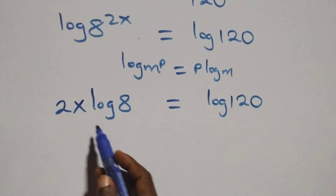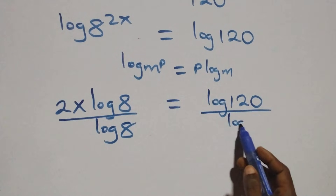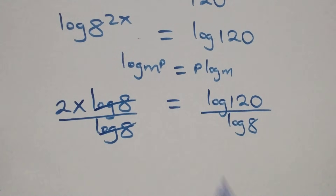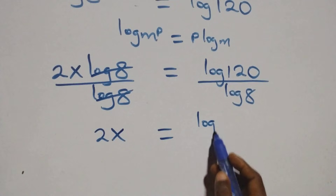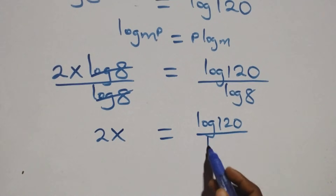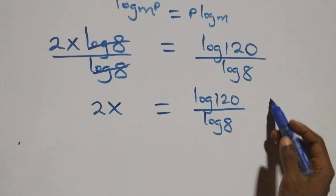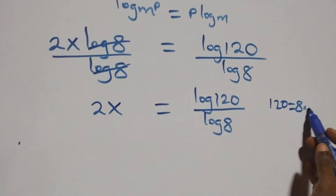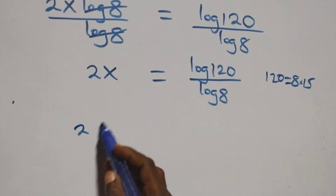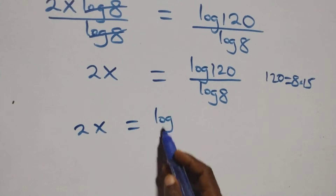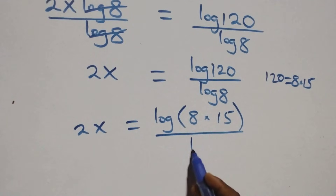From here, we divide both sides by log 8. Dividing both sides by log 8, the log 8 terms cancel each other, and we get 2x equals log 120 over log 8. In the next step, we can write 120 as 8 times 15, so what we have becomes 2x equals log(8 × 15) over log 8.